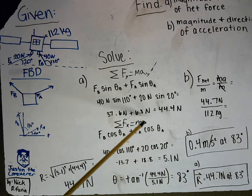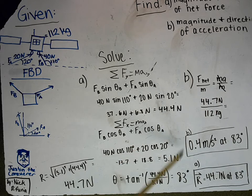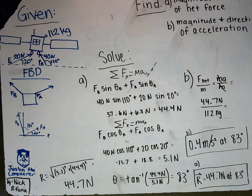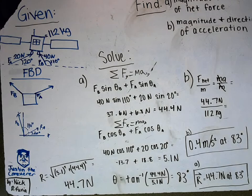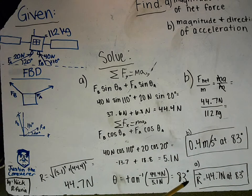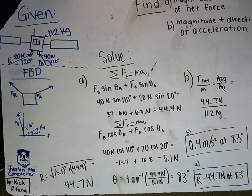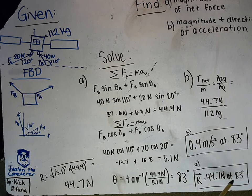Both of these components, the Y component and the X component, are both positive, so it's going to be in the first quadrant at 83 degrees. That looks good to me. The resultant force—this should be F net, not R—is 44.7 Newtons at 83 degrees. That makes sense, right?